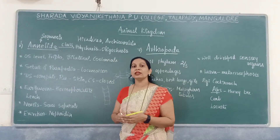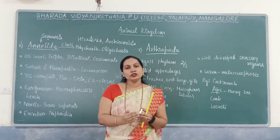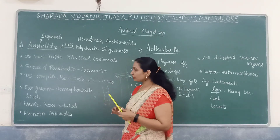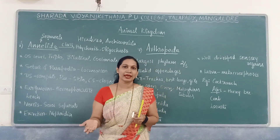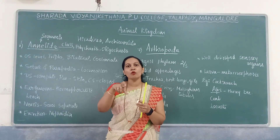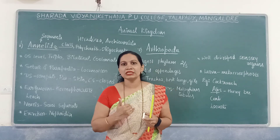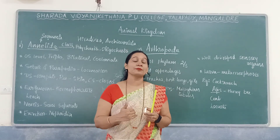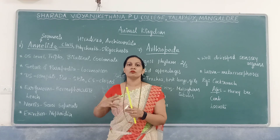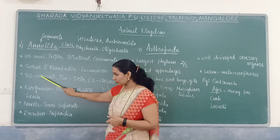Other than these, earthworms also have two types of muscles: longitudinal muscles and circular muscles. These help in forward and backward movement — a peristaltic movement, similar to how food moves in our esophagus.